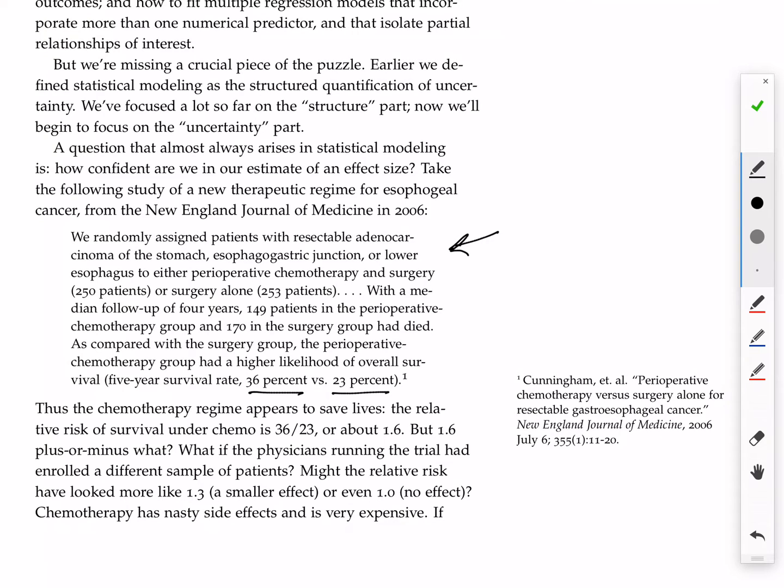The standard way to calculate some kind of association would be a relative risk. So if you calculate the relative risk of survival, it's 36 over 23. That's about 1.6. And the natural question here is, 1.6 plus or minus what?